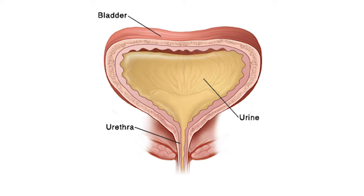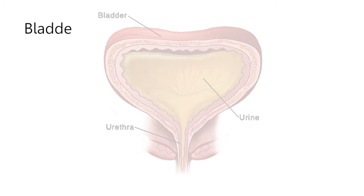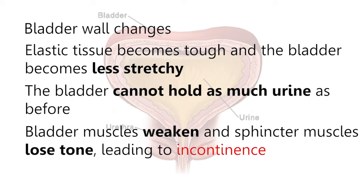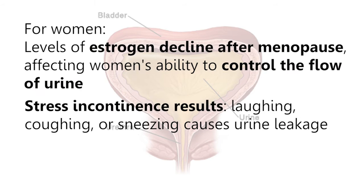For the age-related changes, there will be changes in the bladder. The bladder wall changes and the elastic tissue becomes tough, making the bladder less stretchy. The bladder cannot hold as much urine as before, which decreases bladder capacity. The bladder muscles weaken and the sphincter muscles lose tone, leading to incontinence. Mainly for women, the level of estrogen decreases — especially post-menopause — which affects the ability to control the flow of urine.